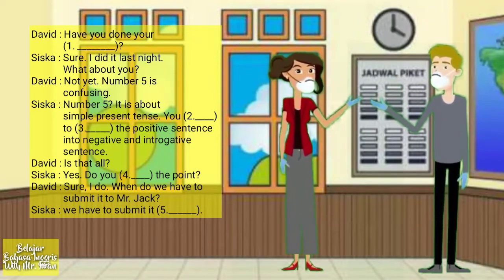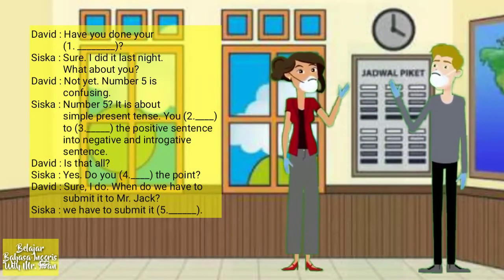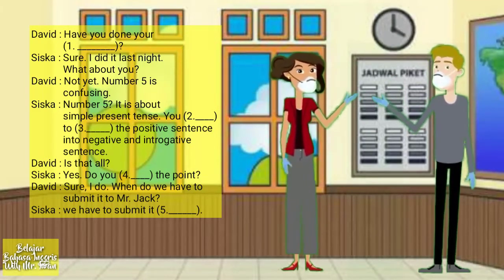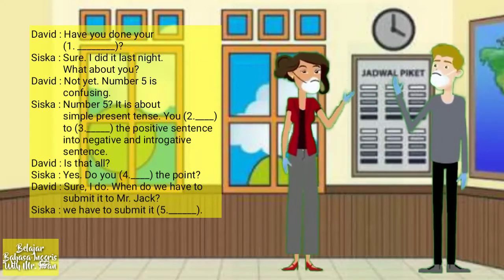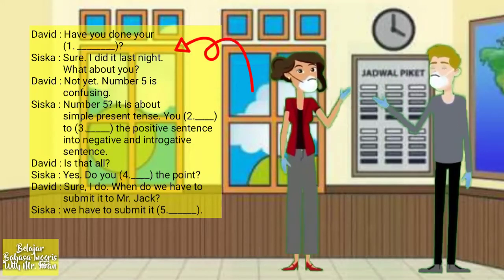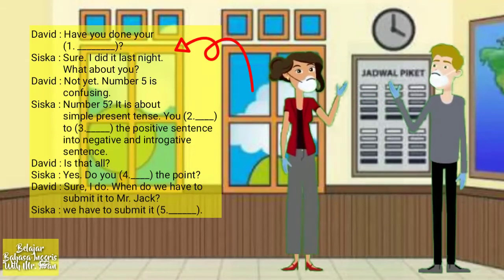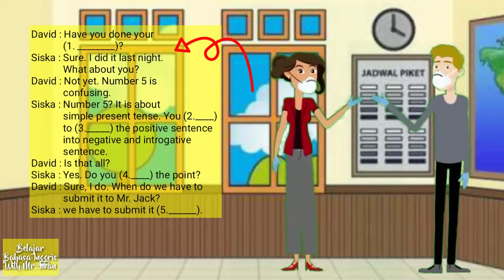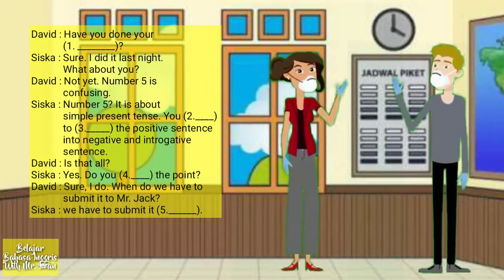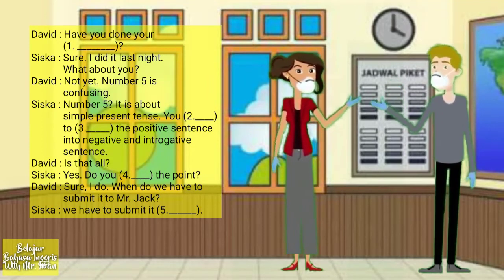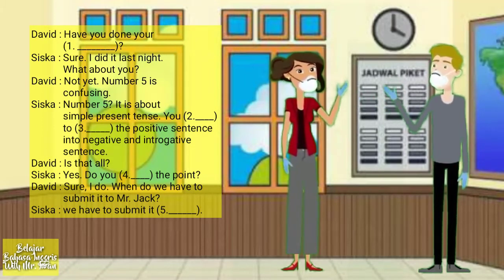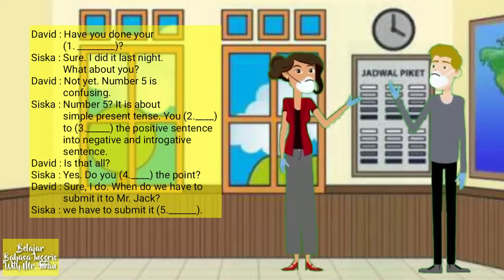Number five? It is about simple present tense. You need to change the positive sentence into negative and interrogative sentence.